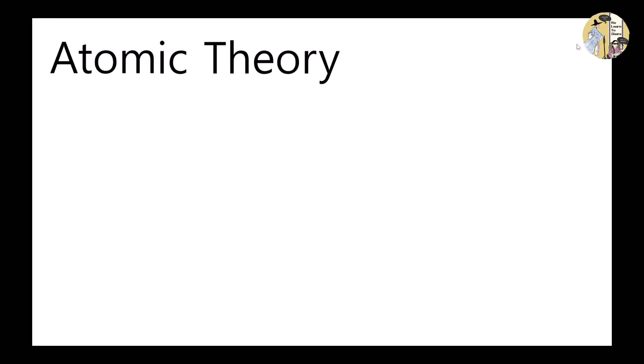In the atomic theory, there are three main postulates which follow John Dalton's atomic model. First, an element is composed of tiny particles called atoms which have the same chemical properties. The atoms of different elements are different from each other.